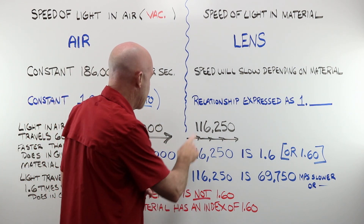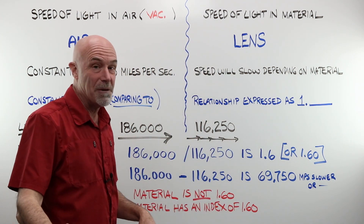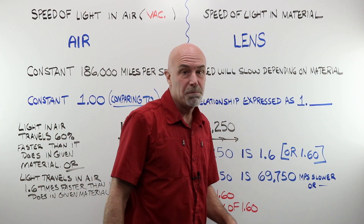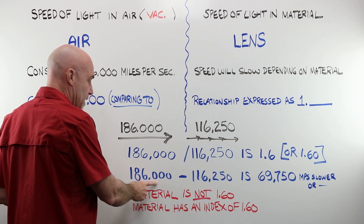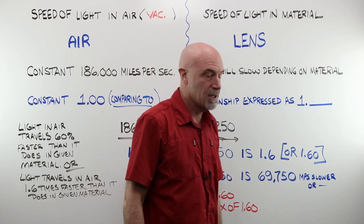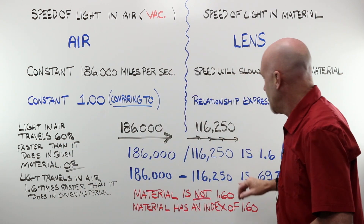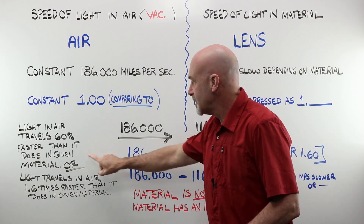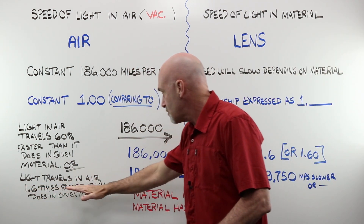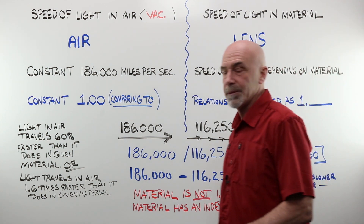A ray of light is whizzing along at 186,000 miles per second. It enters a lens material and it slows to 116,250 miles per second — quite a bit. As a ratio, how many times does this go into this? It goes in 1.6 times, or if we want to write it out, 1.60. From 186,000 miles down to 116,250 is a slowing of light by 69,750 miles per second. Light in air travels 60% faster than it does in this given lens material. Or you could say light travels in air 1.6 times faster than it does in this particular lens material. This is everything.